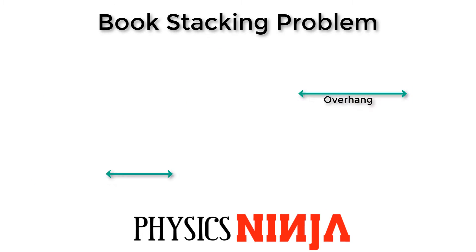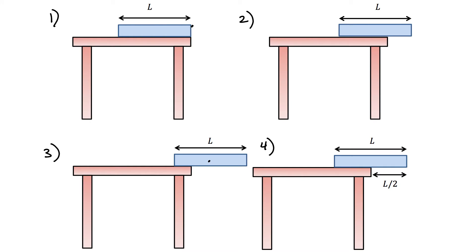We're going to consider blocks that have a length L, each with a mass M. Here are four different cases. Case one: the block is simply sitting on the table — clearly stable. Case two: a little bit of overhang — probably also stable. Case three: most of the block is hanging over the edge — not very stable. Case four is probably the limiting case; without writing down any equations you could guess that's about as far as you could push one block without tipping it over.